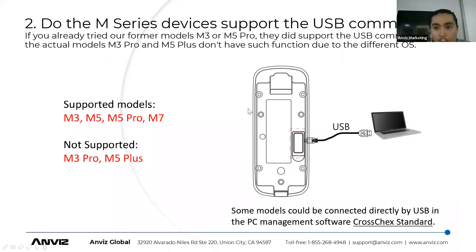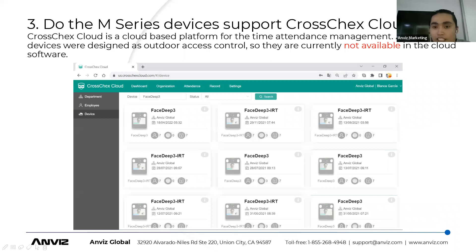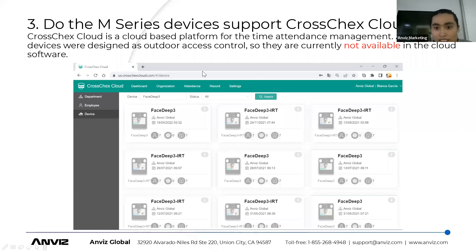The third question is about the CrossCheck Cloud function. As we may have seen in former presentations and training sessions, CrossCheck Cloud is a platform for time attendance management. Currently, all M-Series devices are designed for access control and are not available on the cloud software, so they cannot be added to CrossCheck Cloud — the cloud-based platform for remote device management.